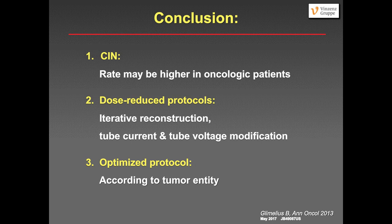A question about low kVp and low flow rate for obese patients: does the dose-reduction protocol still apply? For obese patients, the system will probably not even allow reducing kVp to 100 or 80 — in fact, for obese patients we often not only use 120 kVp but even 140 kVp with quite a high dose. However, the important message is that iterative reconstruction is even more important in obese patients, because it allows you to still reduce mAs. But most likely you cannot reduce kVp in these patients.